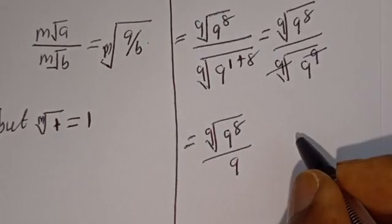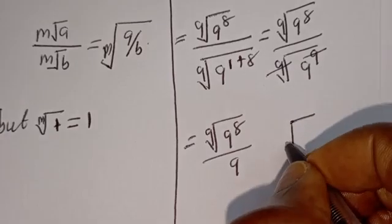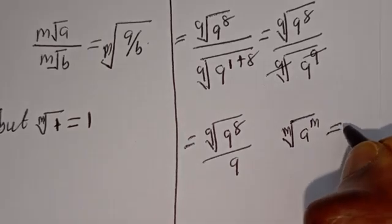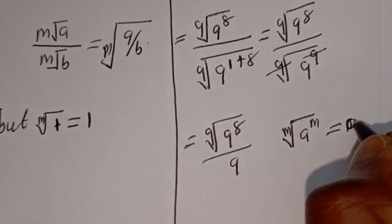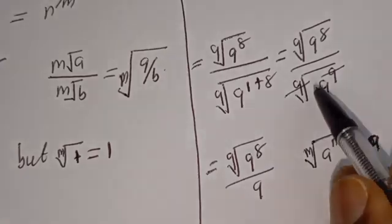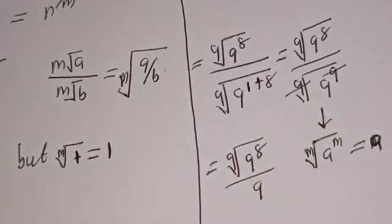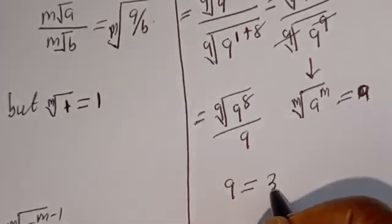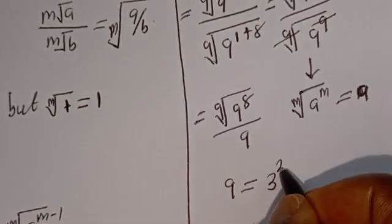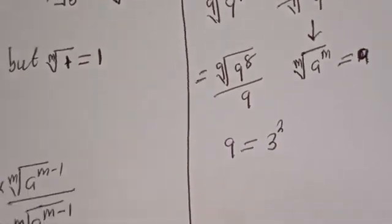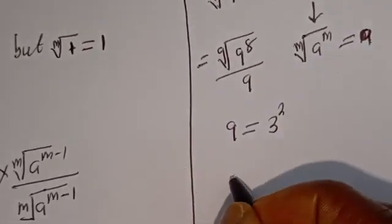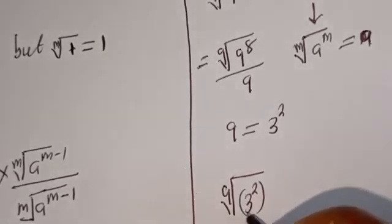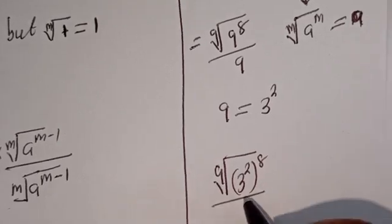Now take note of this identity: if you have the m-th root of a to the power of m, this is equal to a. Also note that 9 is equal to 3 squared. So we can replace this as the 9th root of 3 squared to the power of 8, divided by 9.